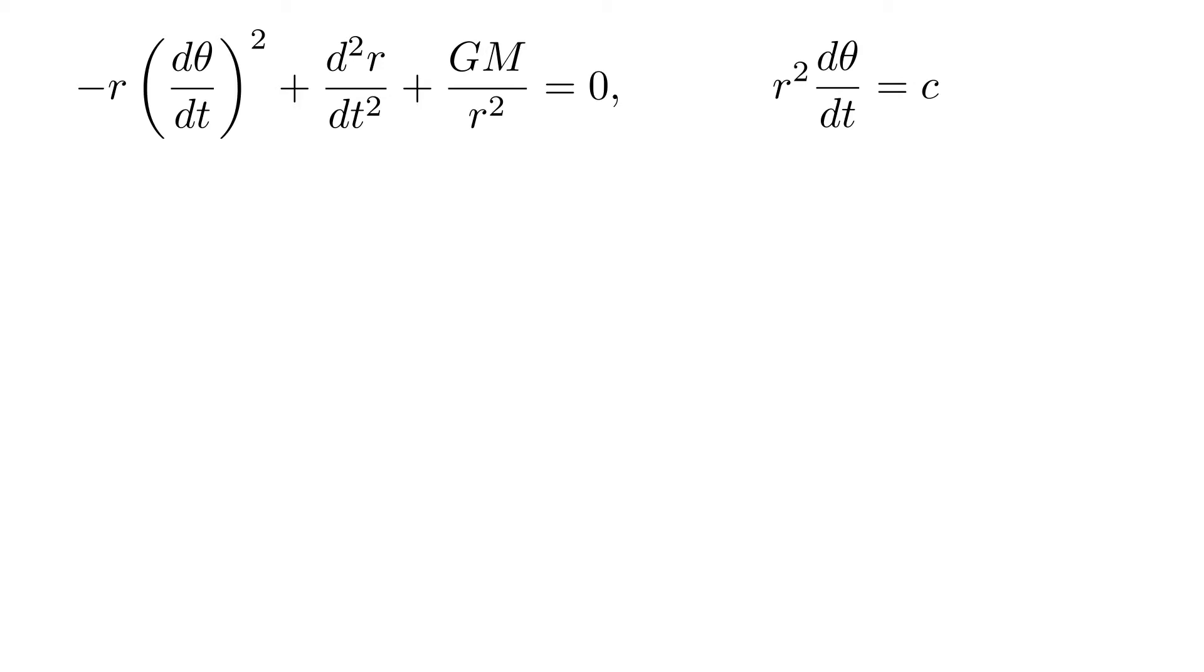We can now use this to eliminate t in the first equation. Firstly, we can replace d theta dt as c over r squared. And then we can write the second term more explicitly as a double derivative and apply the chain rule.